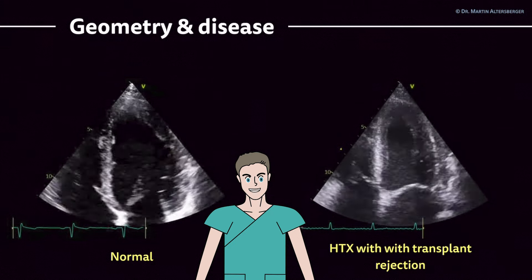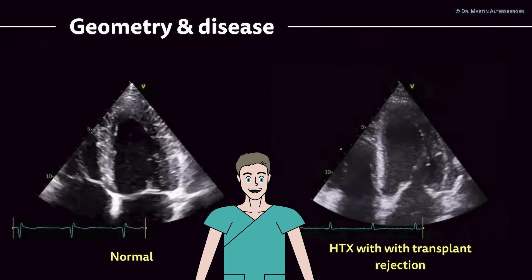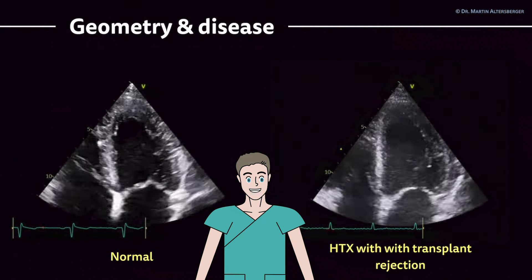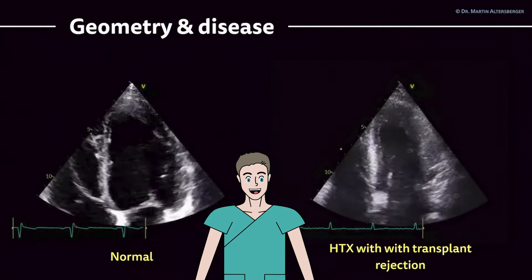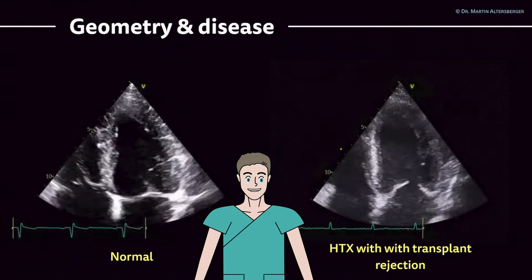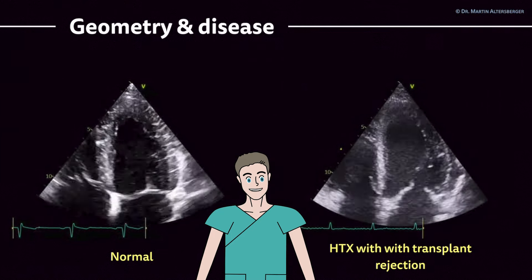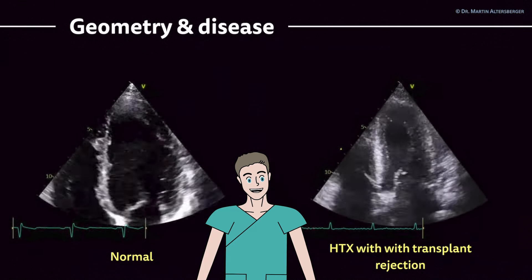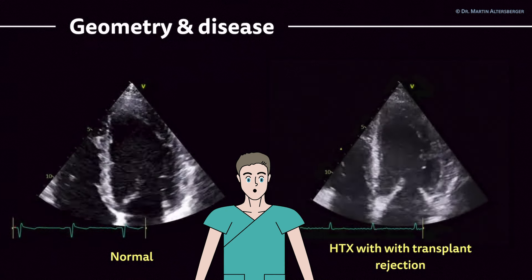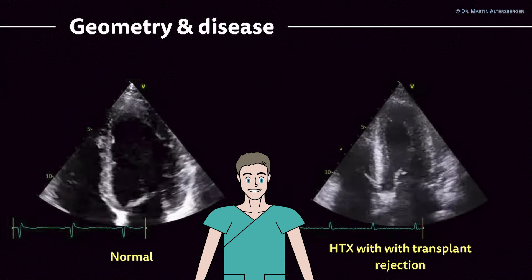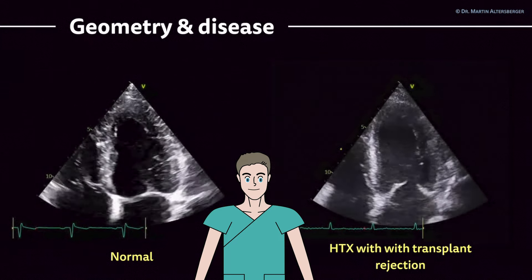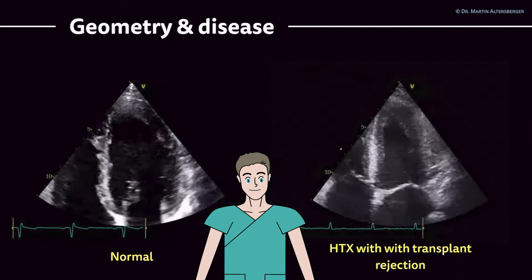Another example is a heart transplanted patient. The ejection fraction here is way better than in the previous example — around 60 percent. However, the myocardium is thickened. In a heart transplant patient, a thickened myocardium always raises the concern of transplant rejection, which was actually occurring in this case. Strain imaging was markedly reduced. Comparing with a normal transplanted heart, the walls should not be thickened.